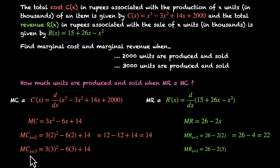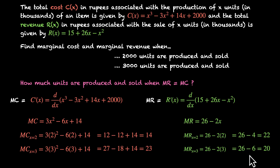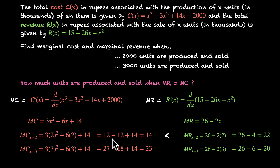For x = 3: marginal cost = 3(9) - 6(3) + 14 = 27 - 18 + 14 = 23. Marginal revenue = 26 - 6 = 20. The cost is higher and marginal revenue has gone down. When producing and selling 2000 units, marginal cost is less than marginal revenue — a good scenario. At 3000 units, marginal cost is greater than marginal revenue, which is not a good scenario.